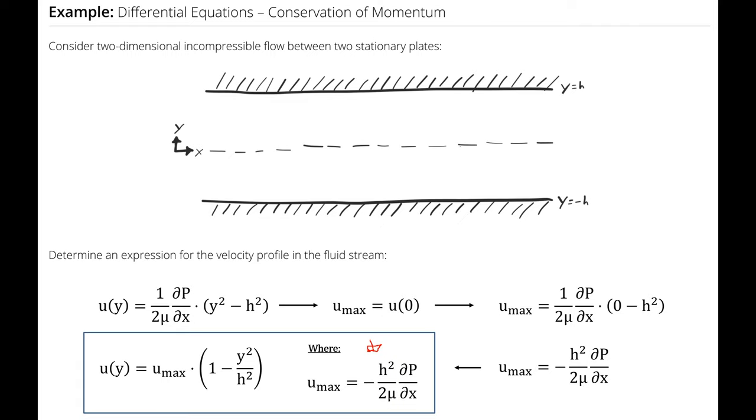So if you think about if there was a high pressure over here and a low pressure over here, my pressure gradient is positive to the left, which means it's negative to the right. The high pressure on the left will drive fluid flow to the right.